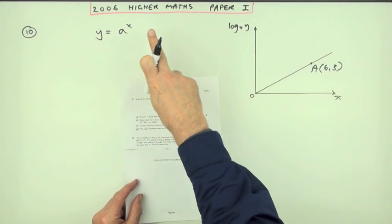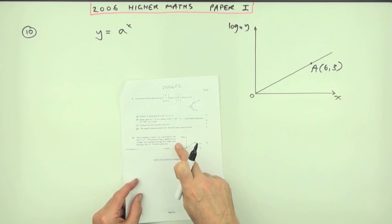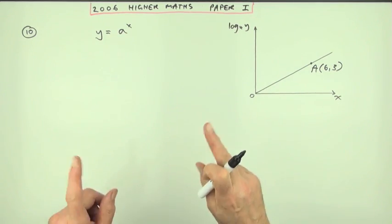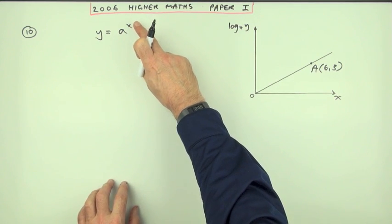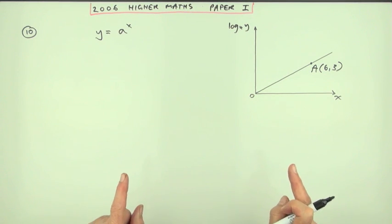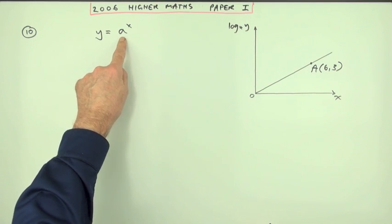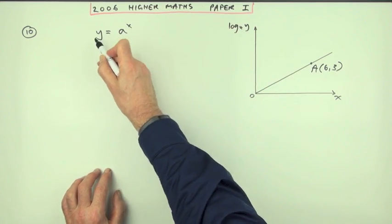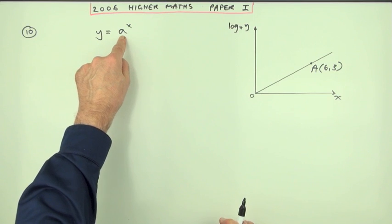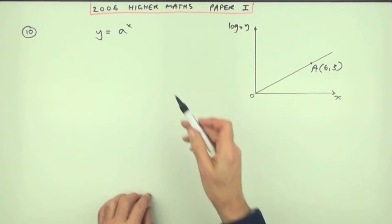Number 10 from the 2006 Higher Maths Paper I is a log question that involves an equation with either unknown or variable powers. Logs are powers. Notice in this one there's only one unknown in this equation. Remembering x and y are variables, a is the constant in the equation, x is the independent variable.